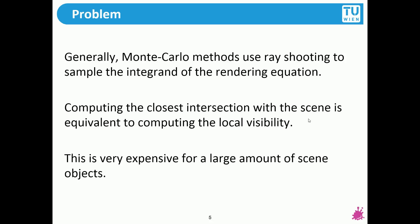To summarize, generally the Monte Carlo method uses ray shooting to sample the integrand of the rendering equation. Usually you have to compute the closest intersection with the scene. This is equivalent to computing the local visibility. How far does a ray travel through the scene before it hits its first object.